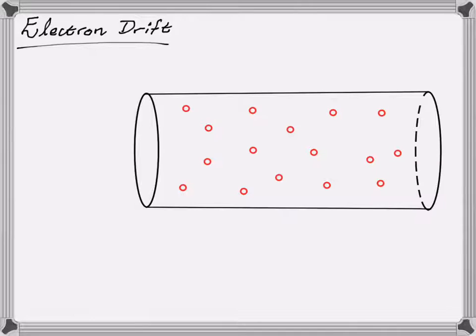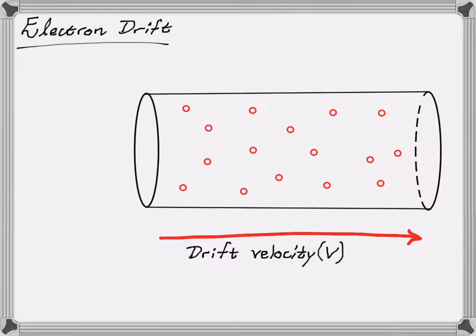However, if we apply a potential difference across it, then we cause the electrons to move. So if we hook the conductor up to a battery or something like that, the electrons start to what we call drift in a particular direction. So in this case, we're going to say that the electrons are drifting from left to right.